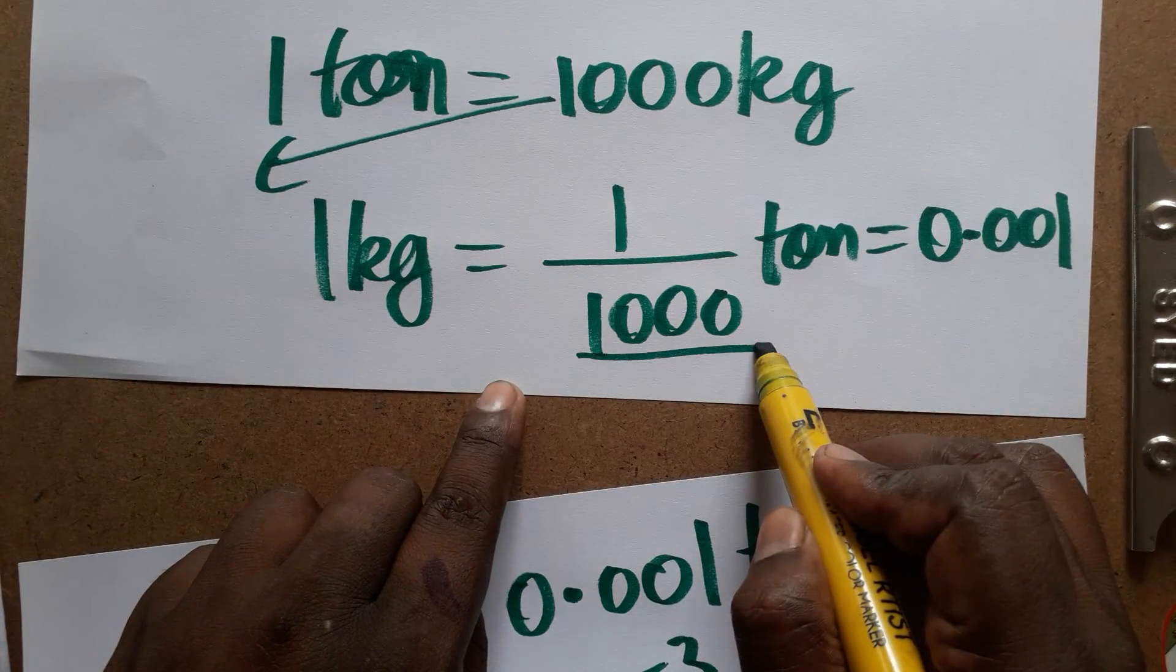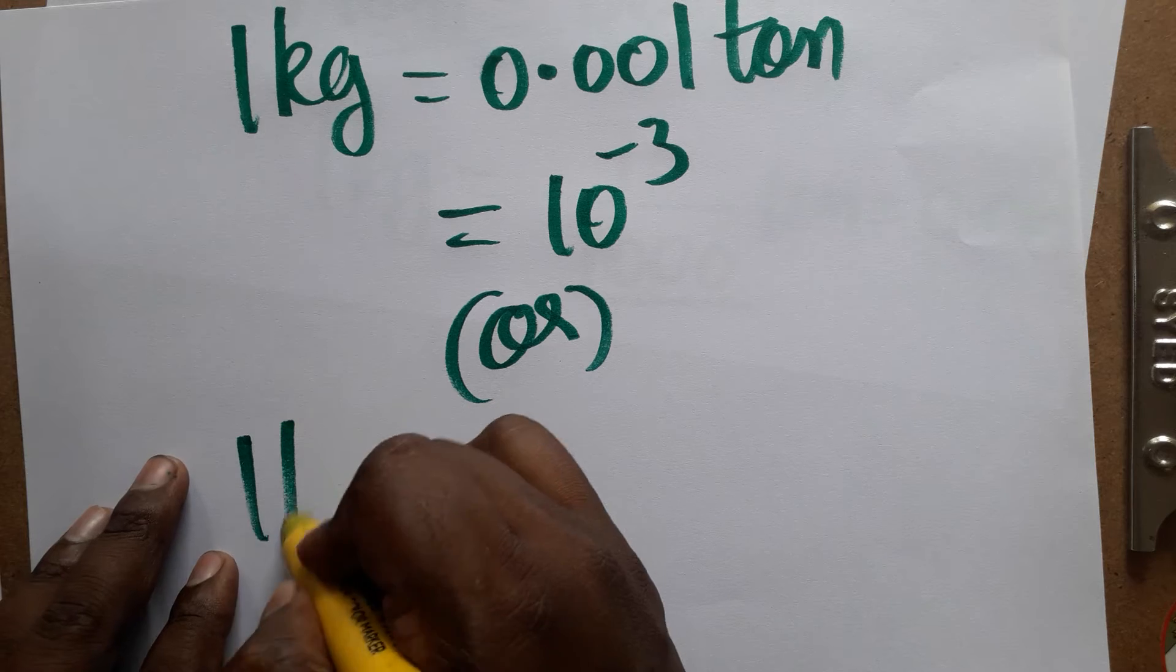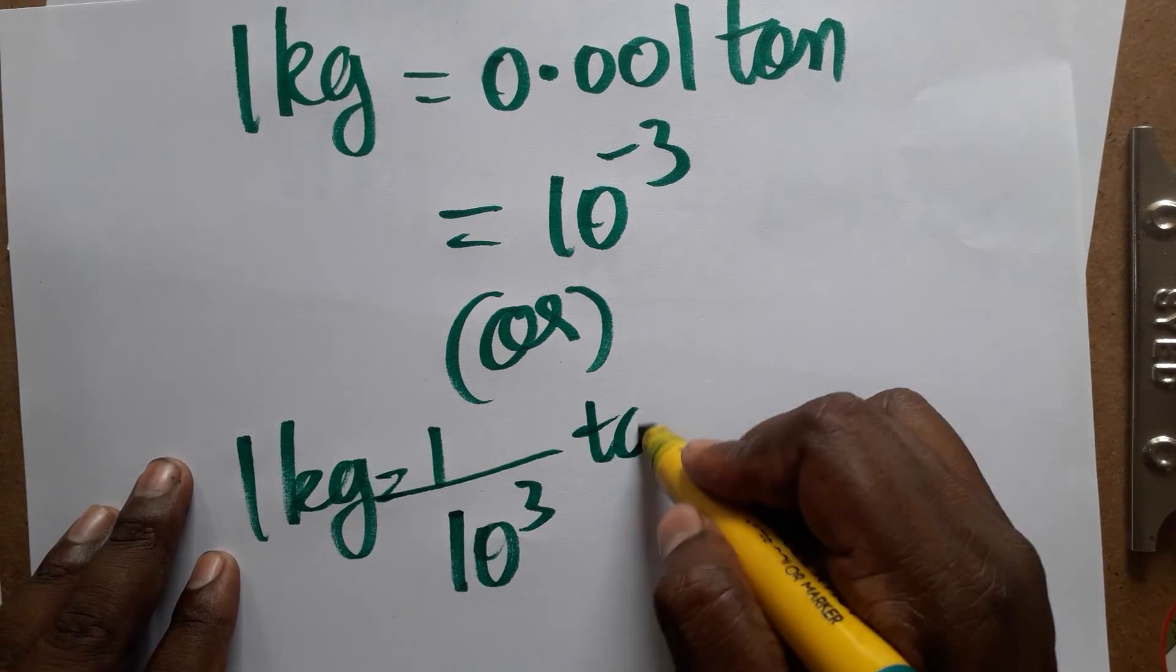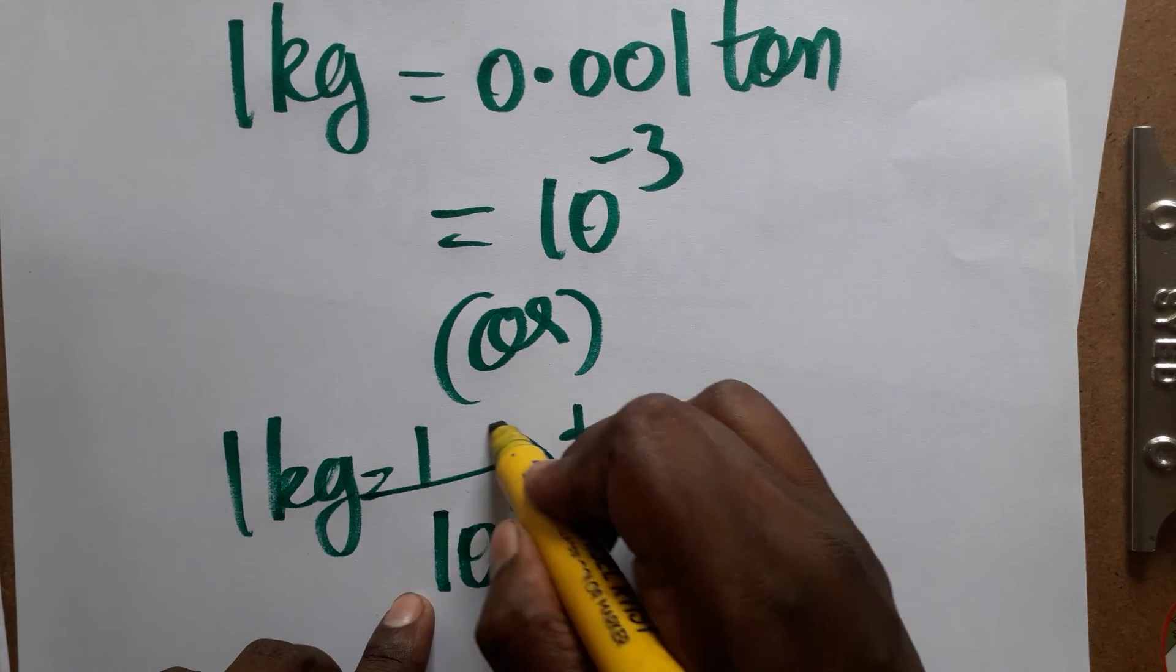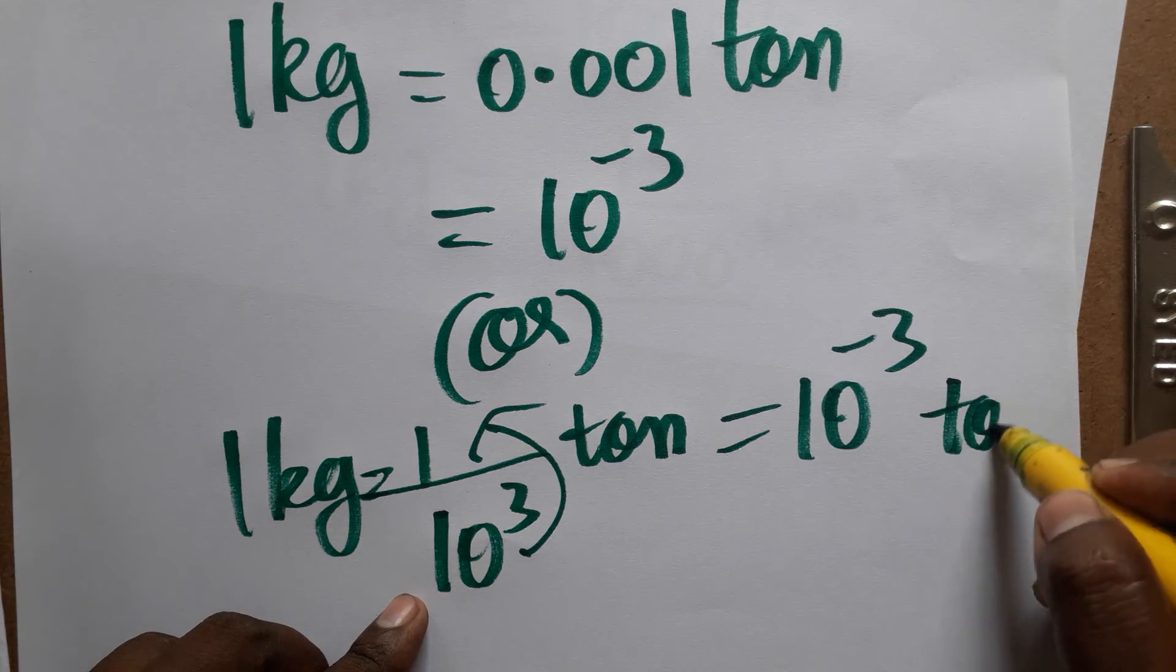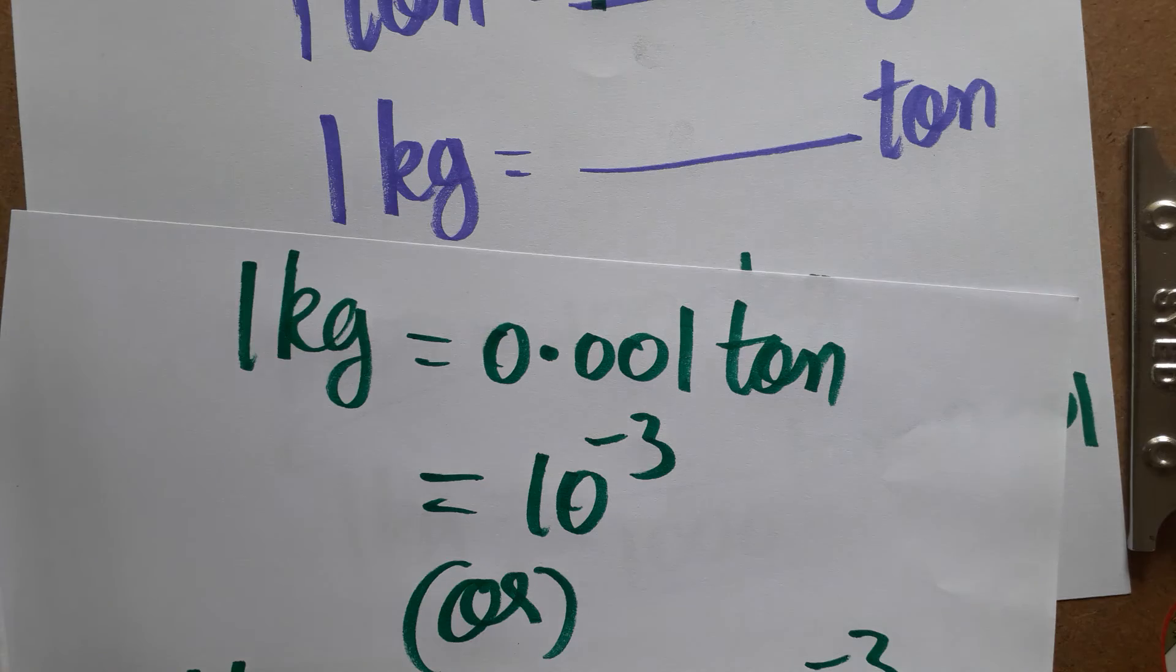This is 10 power plus 3. The alternate method: 1 kg equals 1 divided by 1000, that is 10 power 3 in the denominator. When you take it from denominator to numerator, it becomes 10 power minus 3 tons.